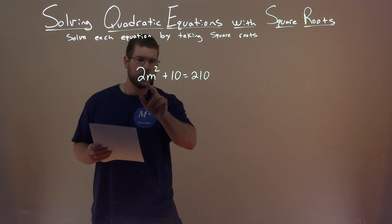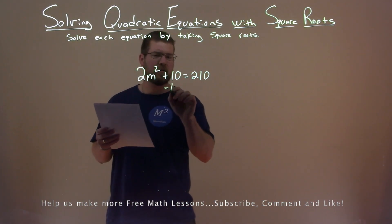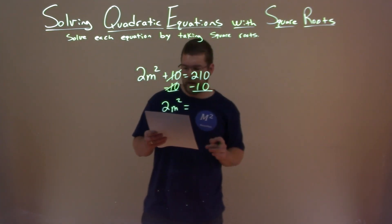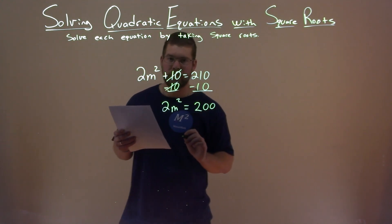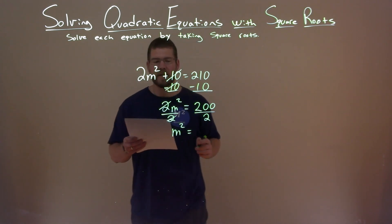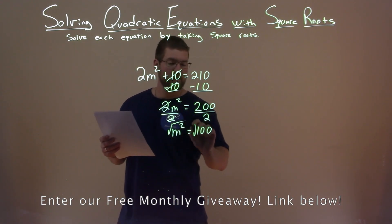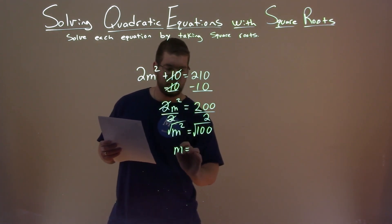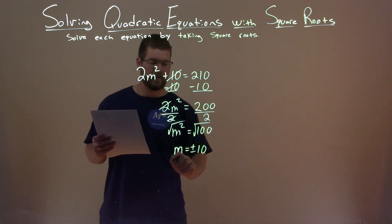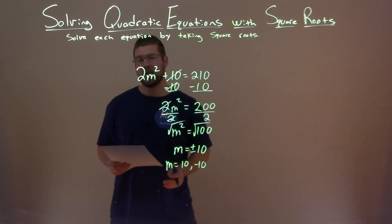We're given 2m squared plus 10 equals 210, and we want to solve this equation by taking the square root. I need to subtract 10 from both sides, eliminating the 10 and leaving 2m squared equals 200. Then divide both sides by 2 — we have m squared by itself equals 100. Taking the square root of both sides, m is by itself, and the square root of 100 is 10. But plus and minus — taking a square root over an equal sign, we need a positive and a negative. So m equals a positive 10 and a negative 10. Final answer: m equals 10 and negative 10.